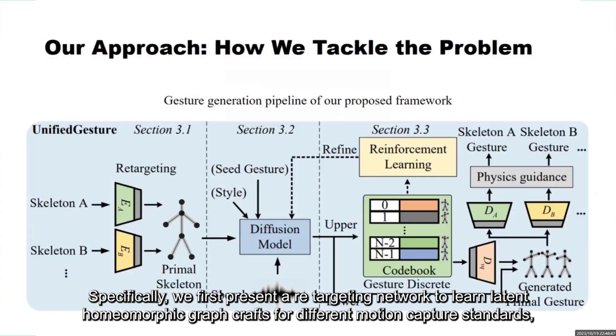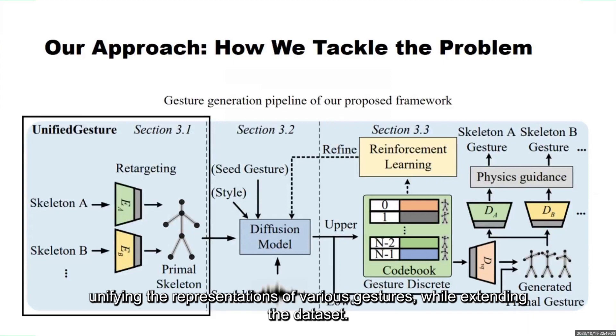Specifically, we first present a retargeting network to learn latent homomorphic graph representations for different motion capture standards, unifying the representation of various gestures and extending the dataset.